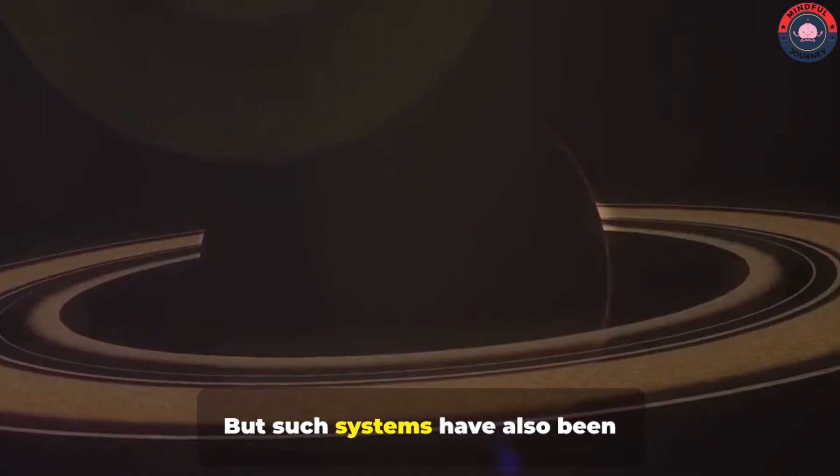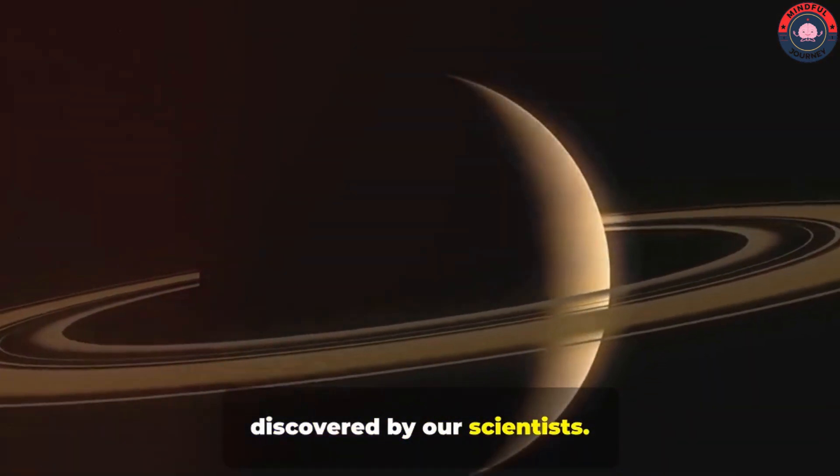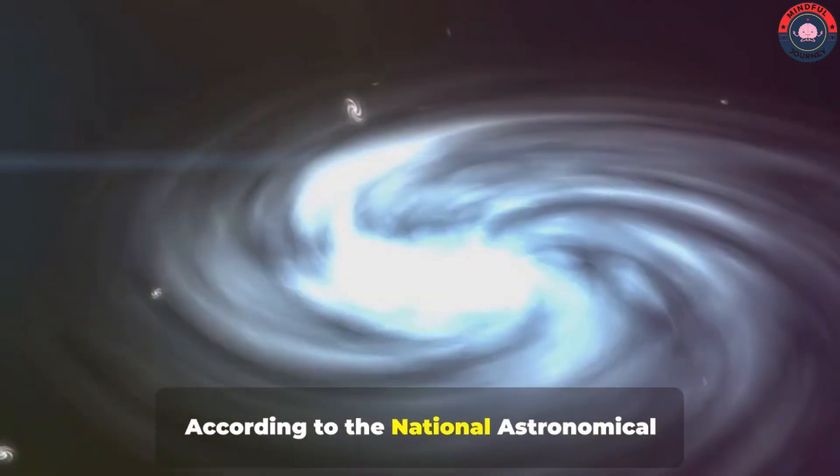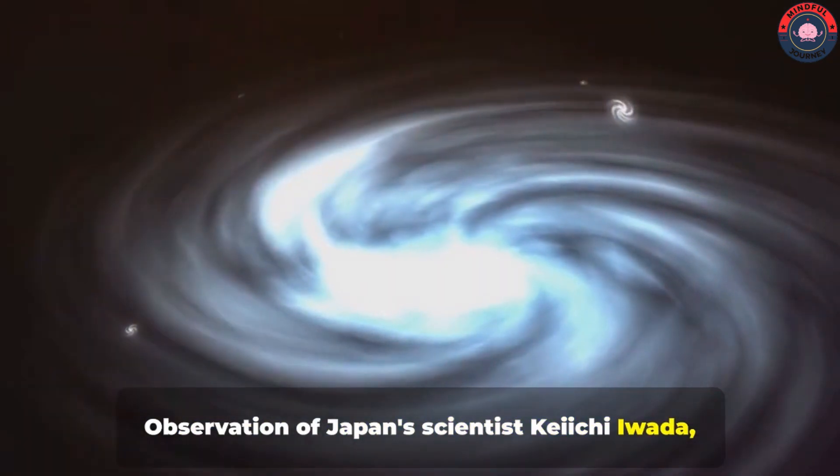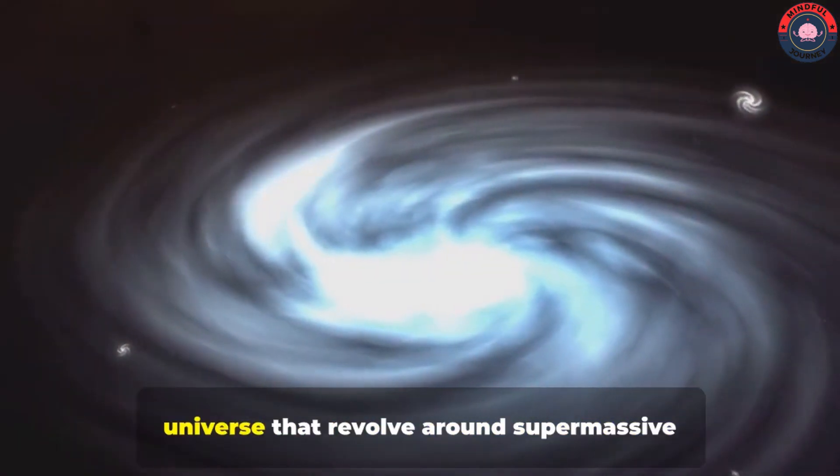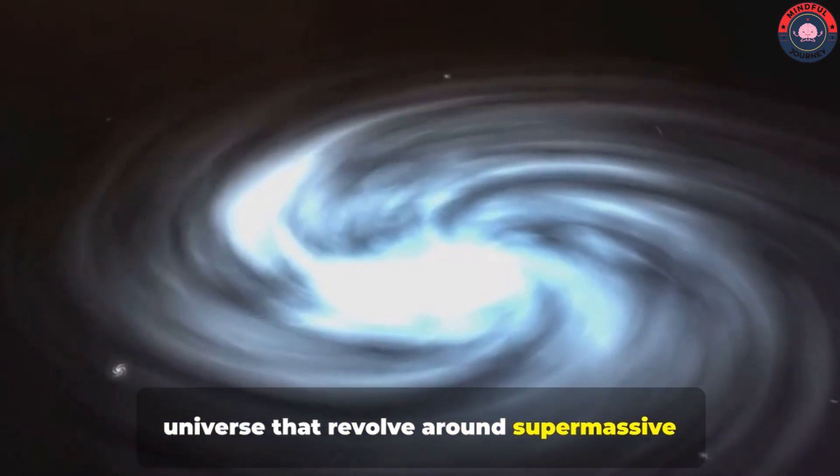Because, how can a planet revolve around a black hole? But such systems have also been discovered by our scientists. According to the National Astronomical Observation of Japan's scientist Keiichi Iwada, there are also such planets in the universe that revolve around supermassive black holes.